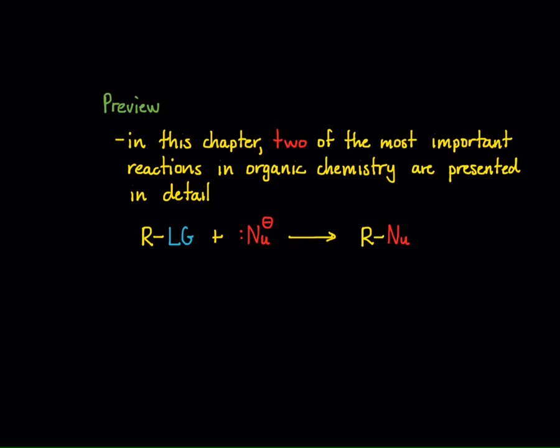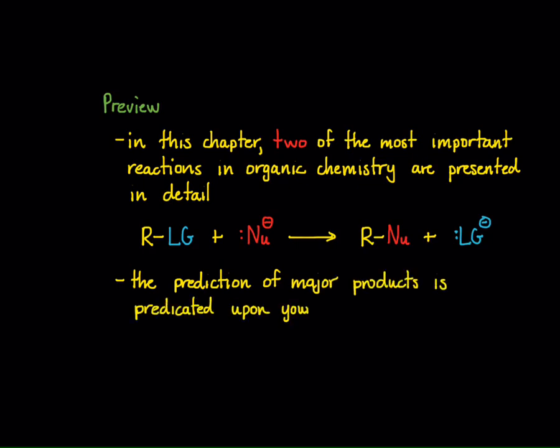So I now have a new substituted alkane, and of course my leaving group has come off. Now, the prediction of the major products in this type of reaction is certainly predicated upon your understanding of the mechanisms of this reaction. And this is where the two types of reaction deviate.